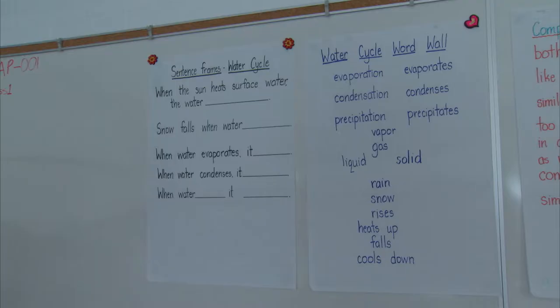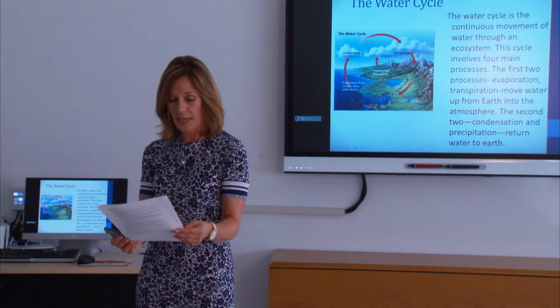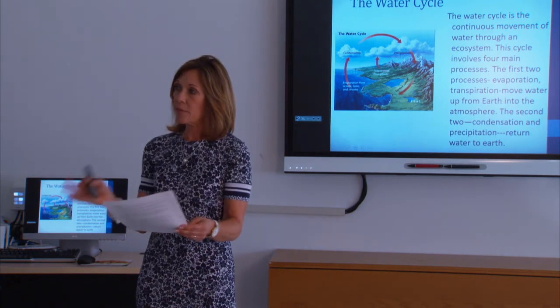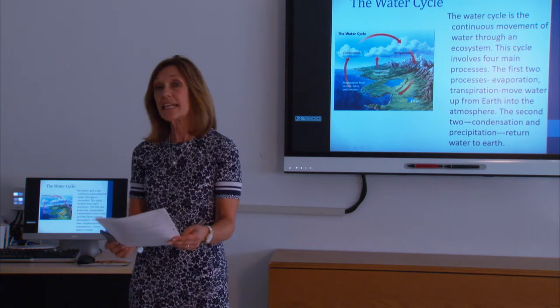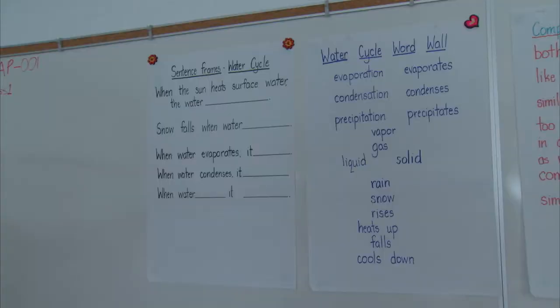The vocabulary you're expecting can vary with the proficiency level of your ELLs. Now students can use the sentence frame and the vocabulary together to come up with a response about their understanding of the water cycle. For example, the teacher could ask, 'What happens when the sun heats the surface of the water?' And the student could use both to say, 'When the sun heats the surface of the water, the water evaporates.'